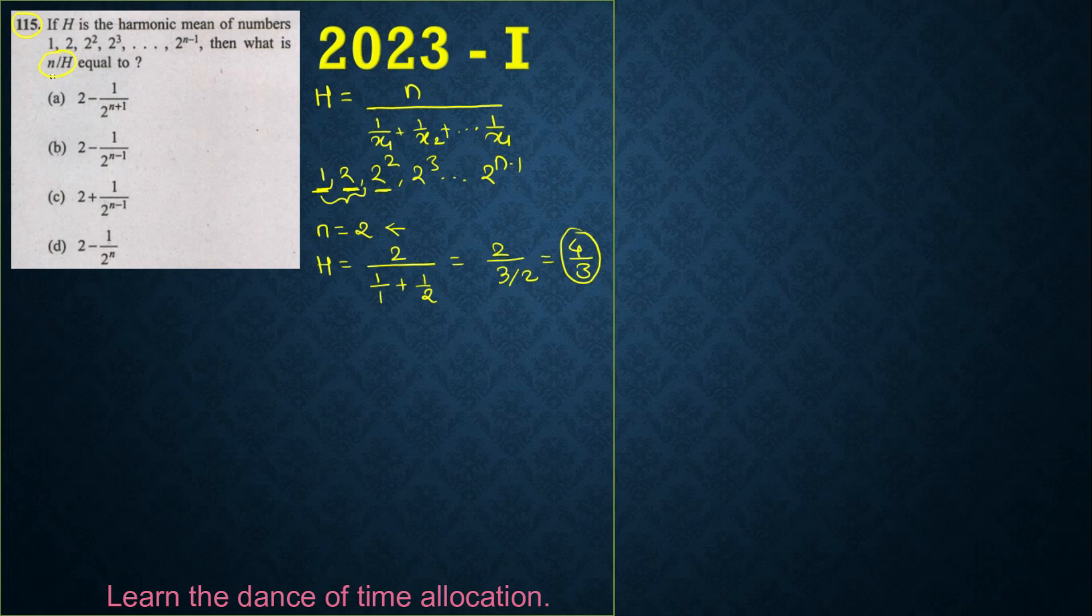They have asked the value of n by H. My n is 2 and H value is 4 by 3. If we solve this, I'll get 2 into 3 divided by 4, so it cancels 4 by 2. The answer is 3 by 2.